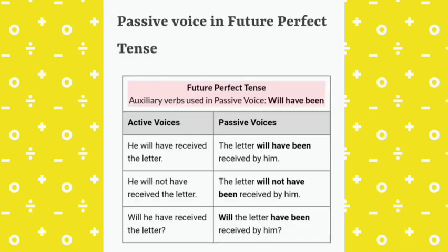In case of future perfect tense, the auxiliary verb in passive voice will be 'will have been.' For example, active voice: 'He will have received the letter.' Passive voice: 'The letter will have been received by him.' Similarly, active voice: 'He will not have received the letter.' Passive voice: 'The letter will not have been received by him.'